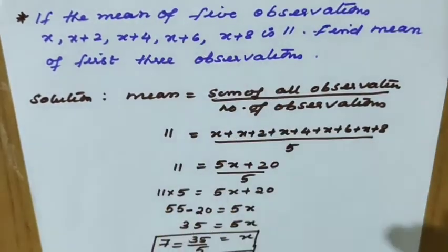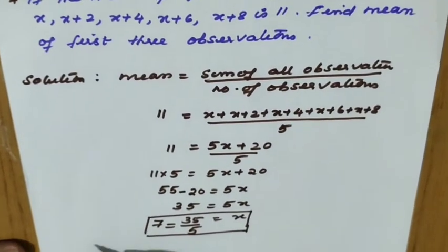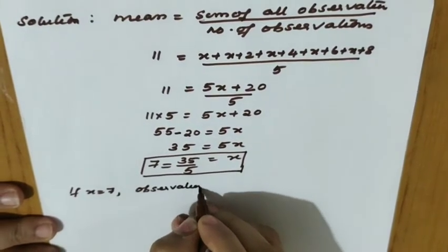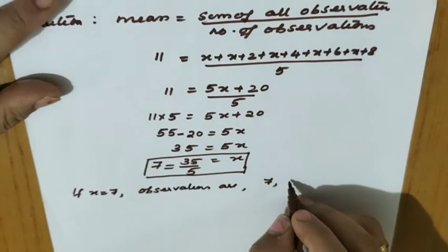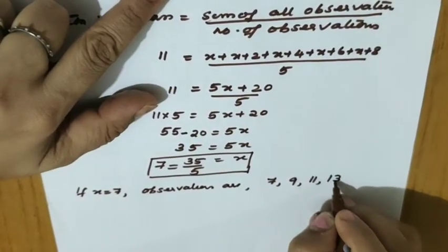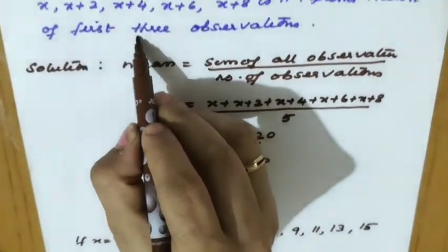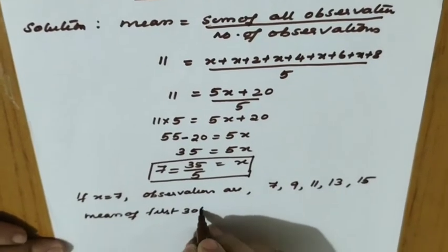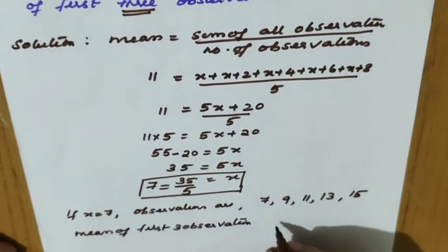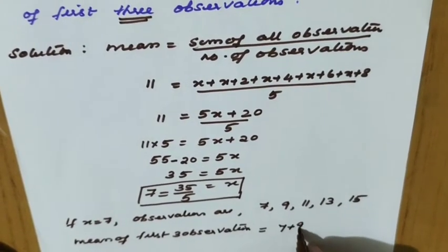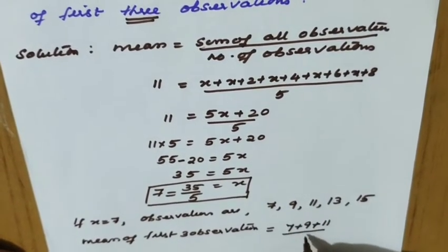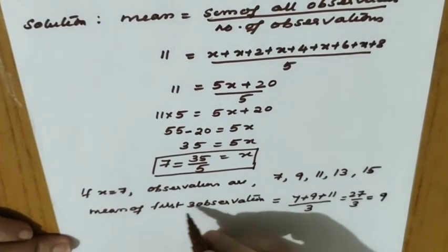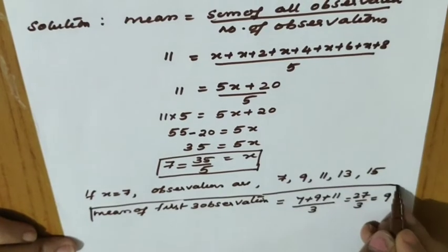With x equal to 7, the five observations are 7, 9, 11, 13, 15. Now the mean of the first three observations: (7 + 9 + 11) divided by 3 equals 27 divided by 3, which equals 9. Therefore the mean of the first three observations equals 9.